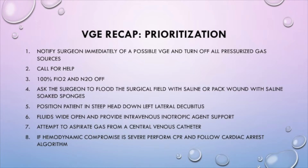Lastly, let's review the steps of prioritization. First, notify the surgeon immediately of a possible VGE and turn off all pressurized gas sources. Second, call for help. Third, turn on 100% FiO2 and make sure nitrous is off. Fourth, ask the surgeon to flood the surgical field with saline or pack the wound with saline-soaked sponges. Fifth, position the patient in a steep, head-down, left lateral decubitus position. Sixth, make sure fluids are wide open and provide intravenous inotropic agent support. Seventh, attempt to aspirate gas from a central venous catheter. And lastly, if hemodynamic compromise is severe, perform CPR and follow the cardiac arrest algorithm.